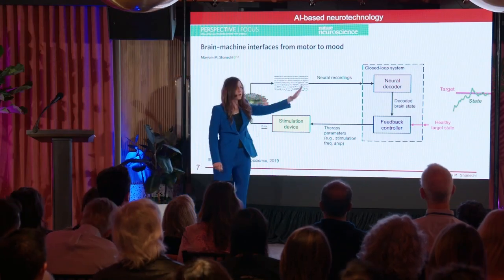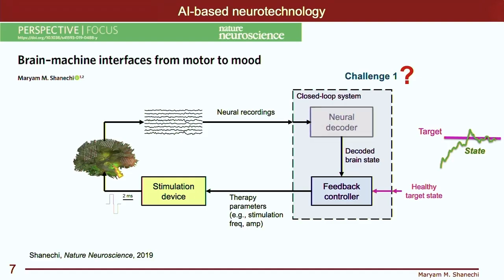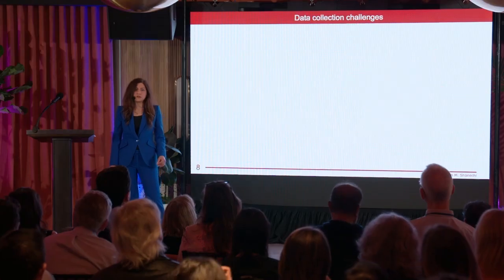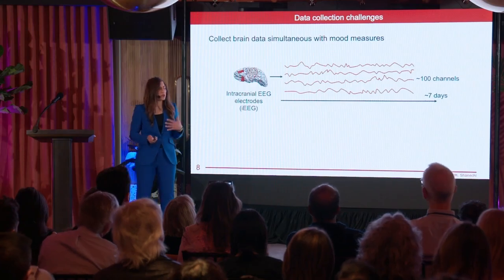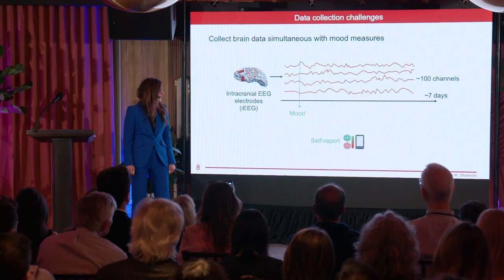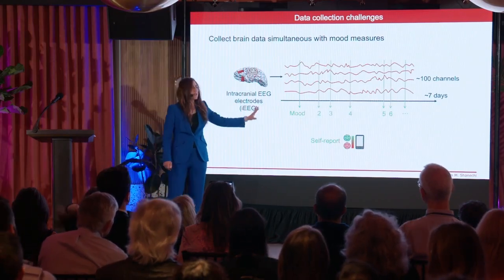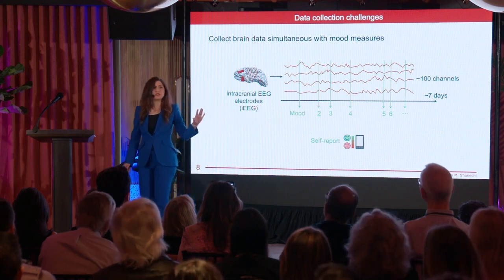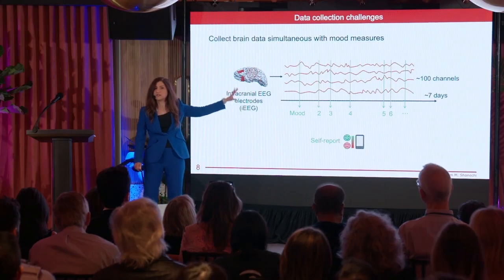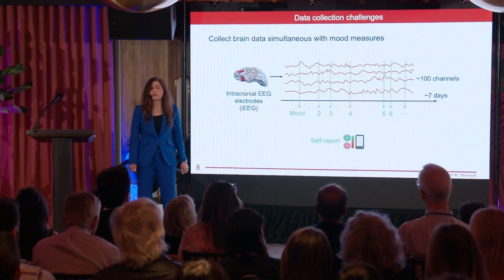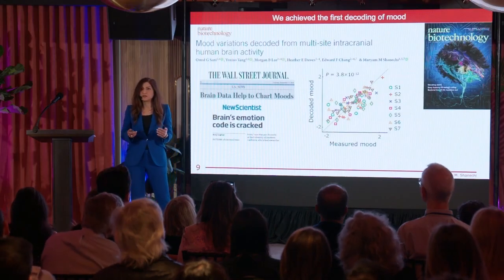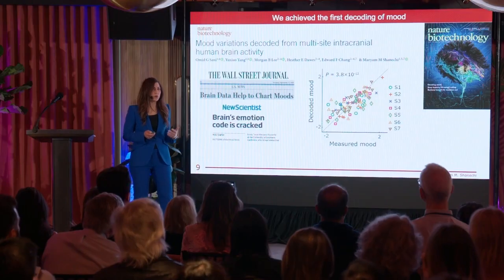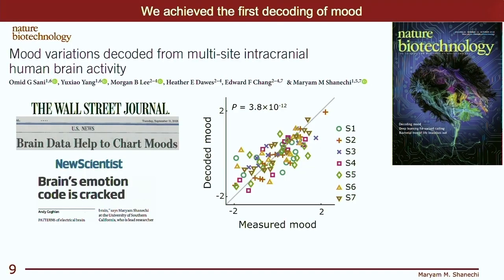What are the challenges we have to deal with to build this closed-loop system? The first challenge is to actually build the decoder. To do this, we obtain neural recordings from a network of brain regions, and while obtaining these recordings, we ask patients to intermittently report their mood — a couple times a day — using iPad-based self-reports. This gives us the data to train our decoder. Back in 2018, we developed a new dimensionality reduction for brain data, and showed that using this, we could successfully achieve the decoding of mood from human brain activity — something that was not possible before. This opened the door to objective tracking of symptom states.